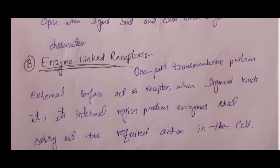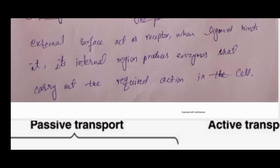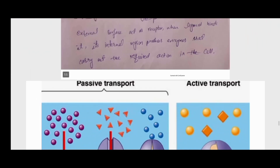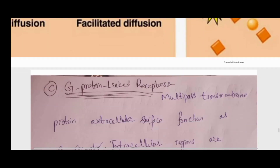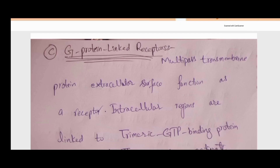Enzyme-linked receptors are one-pass transmembrane proteins — small proteins that pass through the cell membrane only once. Their external surface acts as a receptor. When a ligand binds to the external surface, it stimulates the internal surface to produce enzymes that carry out required functions within the cell. The third type is G-protein-linked receptors, which are multi-pass transmembrane proteins. Their extracellular surface functions as a receptor.